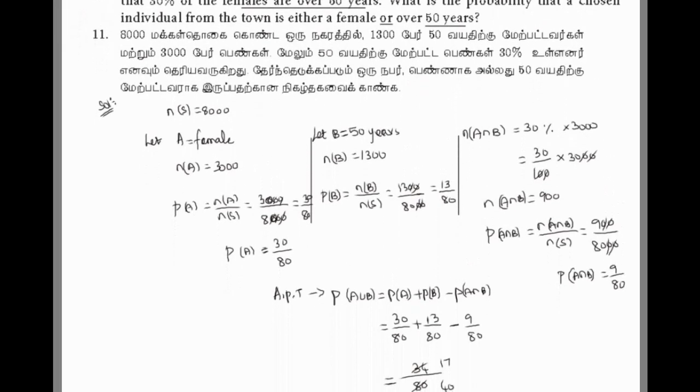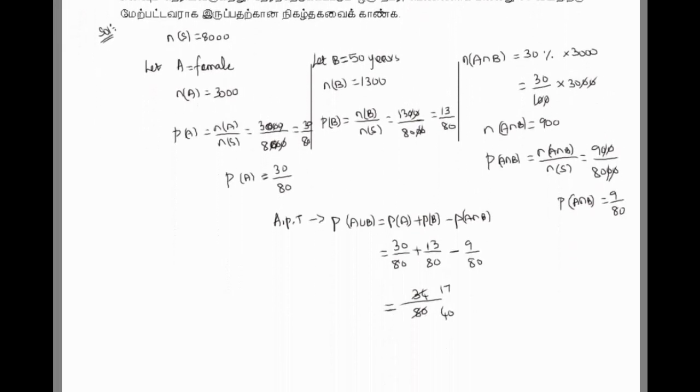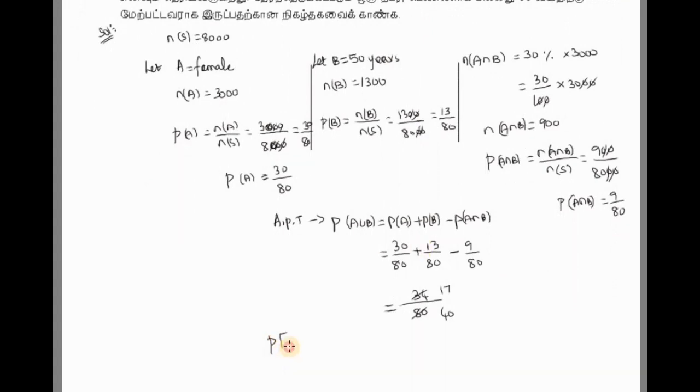So the final answer: the question is either female or over 50 years. The probability of either female or over 50 years is 17 by 40. Okay, thank you.